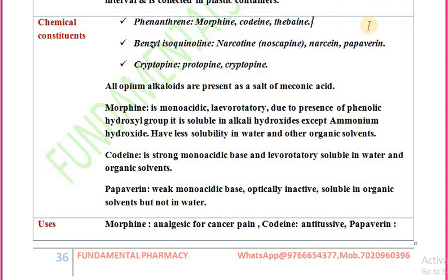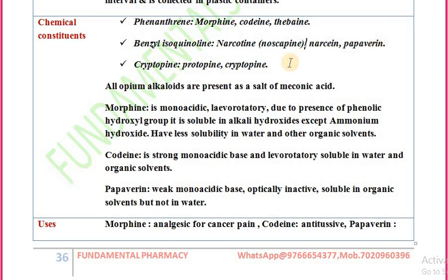The second class is benzyl isoquinoline alkaloids. Examples include narcotine, narceine, and papaverine. Narcotine is also known as noscapine. The third class is the cryptopine group, with examples protopine and cryptopine.